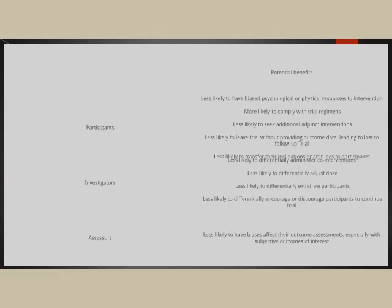Participants are also less likely to transfer their inclination or attitude to other participants. For investigator blinding, they are less likely to administer co-interventions, adjust doses, differentially withdraw participants, or encourage or discourage participation. If the investigator is unaware, it is less likely they will withdraw or adjust the dose of clinical trial drug or placebo, giving a better response in the clinical trial.